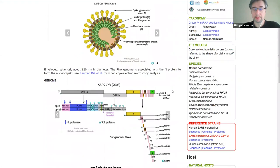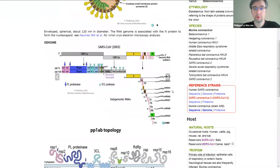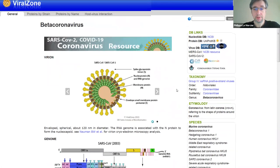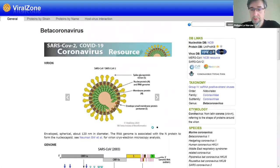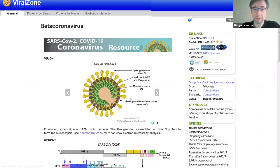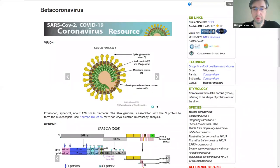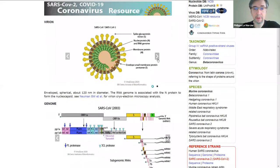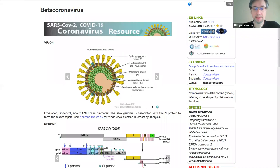In the ViralZone resource, we have the fact sheet, a classical fact sheet about the beta coronavirus genus. You have more information on genome and expression, because coronaviruses have very special ways of making messenger RNAs and translating them. You have a link to the proteome, the interactome, the curated interactome, the life cycle of the virus, and some data about drugs tested against COVID-19.